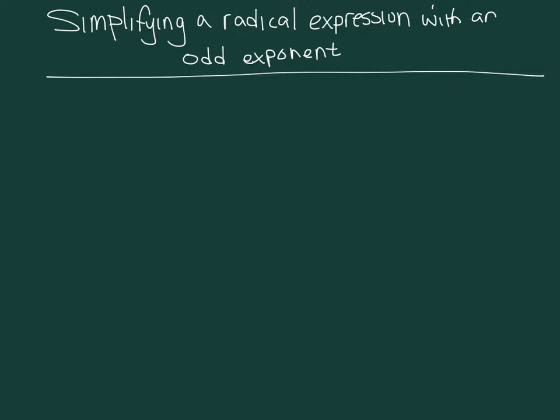Okay, so today what we're going to look at is simplifying a radical expression with an odd exponent. And so what that means is if we had something that was the square root of, let's say, 16x to the 15th. So that's what we are going to use as our problem here.